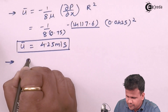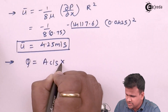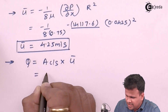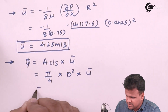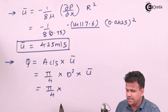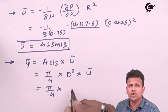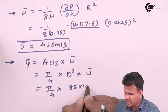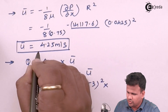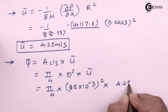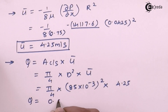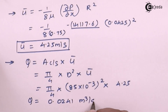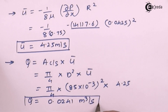Next we calculate Q. Q = area of cross section × U bar = (π/4) × d² × U bar = (π/4) × (85 × 10⁻³)² × 4.25. So Q equals 0.0241 meter cube per second. Discharge is now calculated.